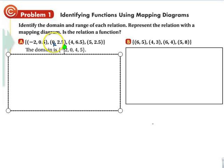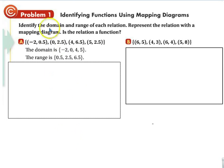So the domain is the x value, negative 2, 0, 4, and 5. The range are going to be the y value, 0.5, 2.5, 6.5, and 2.5. You notice that you write it once. And you know, it's helpful to put it in order, but it doesn't have to be in order.